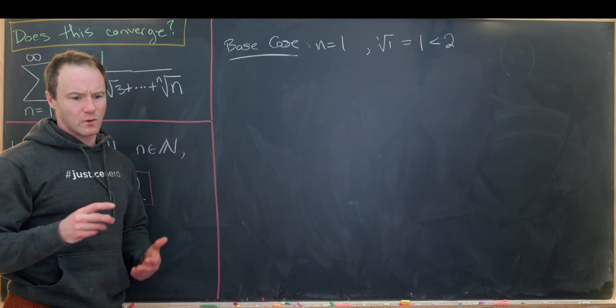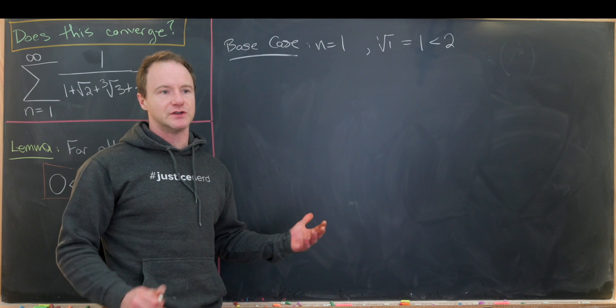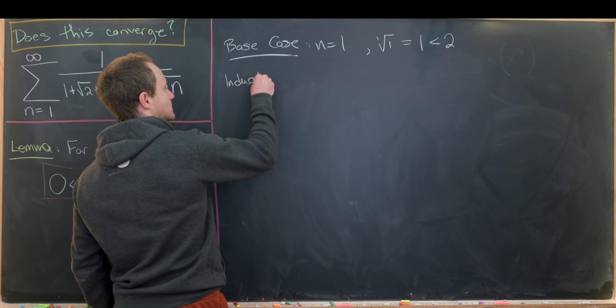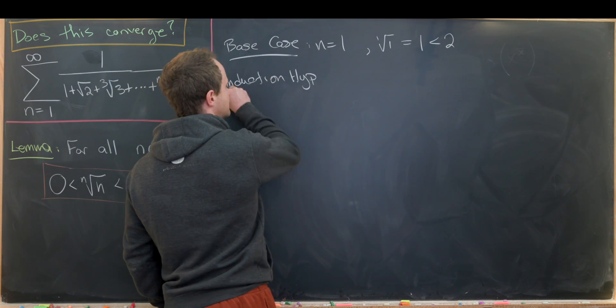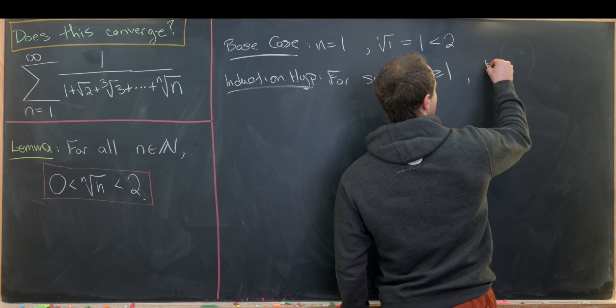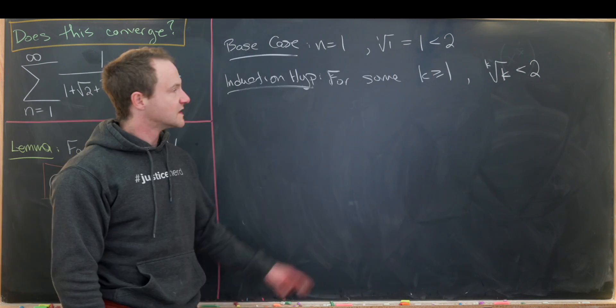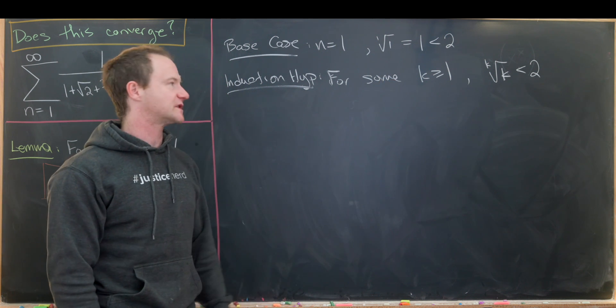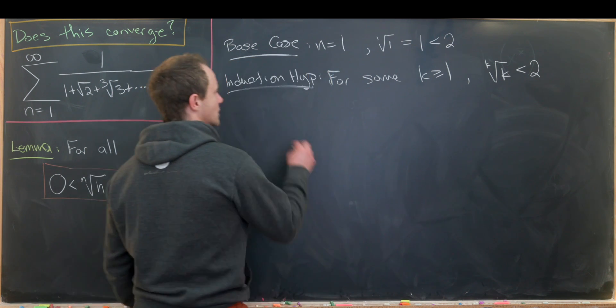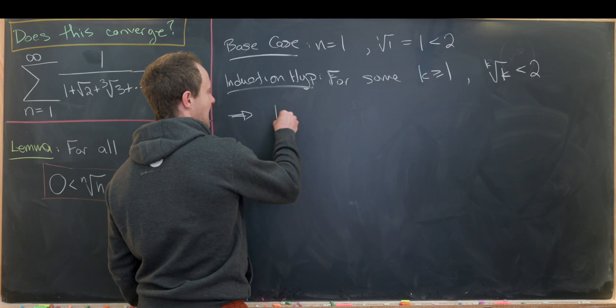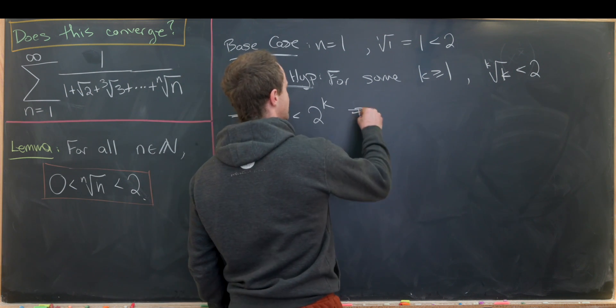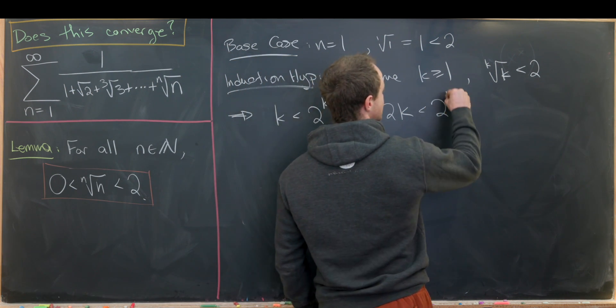If you'd like maybe a more substantial base case, you could look at n equals 2. The square root of 2 is clearly less than 2. There are a number of ways to show that. Okay, so now let's make an induction hypothesis. So our induction hypothesis will be for some, let's say, k bigger than or equal to 1, we have the kth root of k is less than 2. And now we're going to somehow try to build this until we have the k plus first root of k plus 1 is less than 2. But maybe the first thing we'd like to do is exponentiate so we no longer have a crazy root. And that'll give us something like this. We have k is less than 2 to the k. But now we can multiply both sides by 2, and that'll give us 2 times k is less than 2 to the k plus 1.